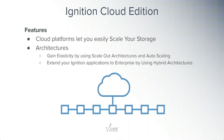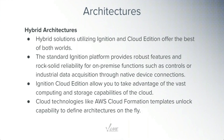The architectures that are enabled include a variety of different options, but hybrid architectures are one of the big ideas that are possible. The standard Ignition platform provides a whole variety of things for on-premise, and Cloud Edition provides a variety of things in the cloud, giving you the best of both worlds when you marry those up. Let me go ahead and pass it over to Kevin to talk through some of the architecture diagrams for what a hybrid architecture looks like.